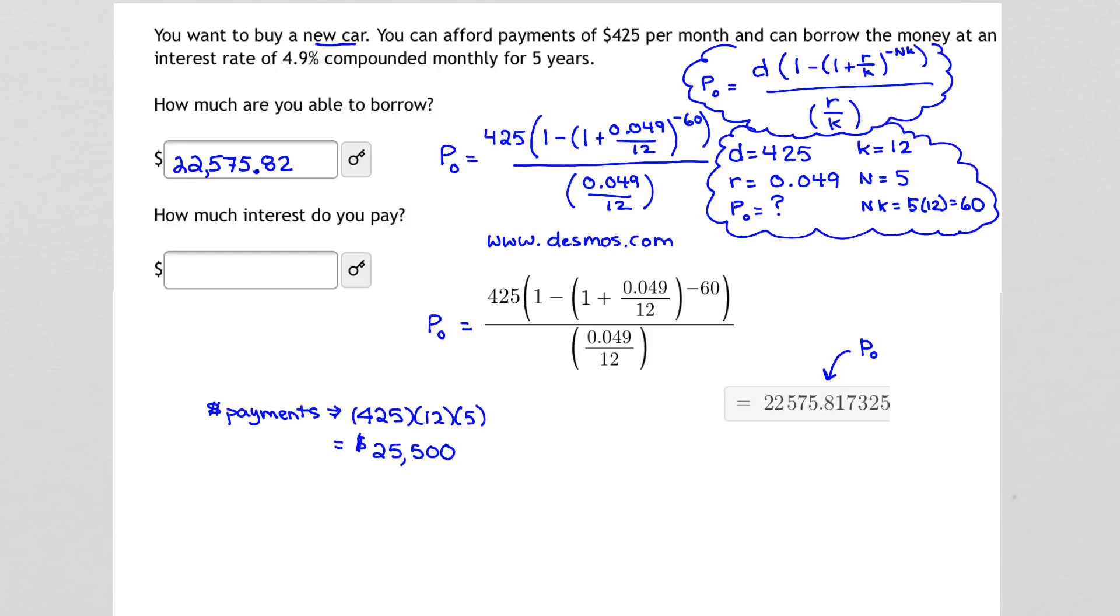To get the interest, we now have to subtract the loan amount from the payment amount. So this is our payments. That's how much we paid over the course of the loan. The loan amount initially was $22,575.82. If we take the difference or subtract those two, that's going to give us the interest. Payments minus loan is interest.